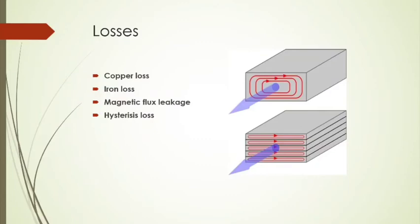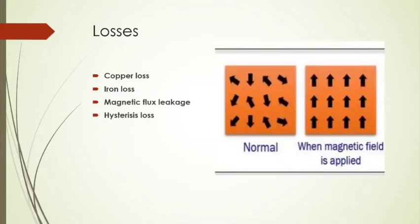The fourth one is hysteresis loss. When the iron core undergoes a cycle of magnetization, the core gets heated due to hysteresis.